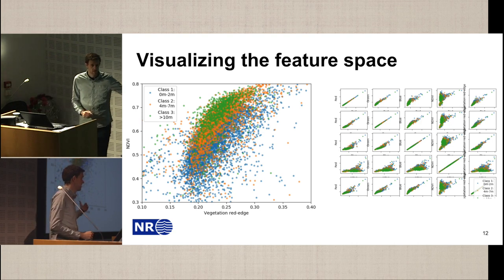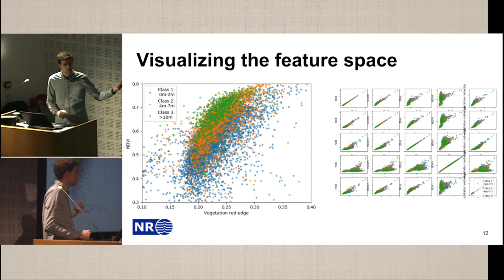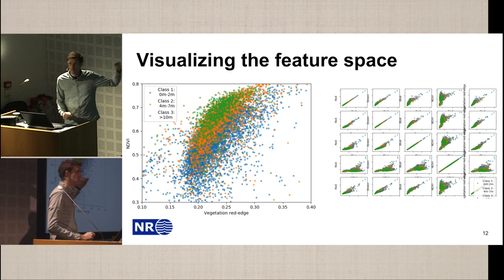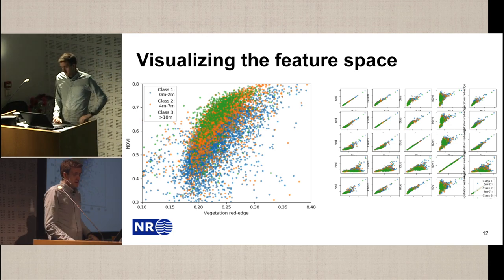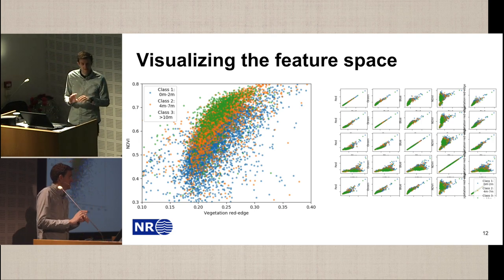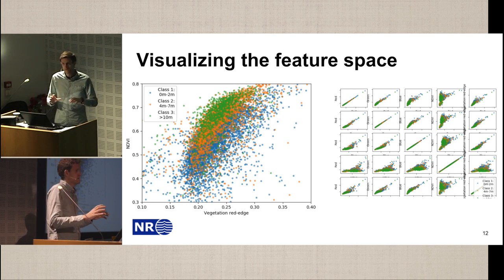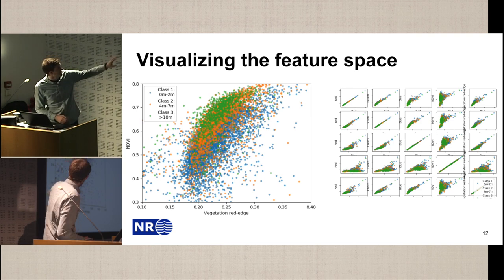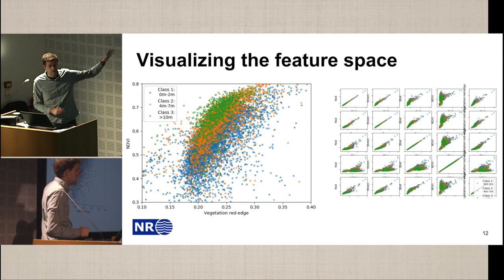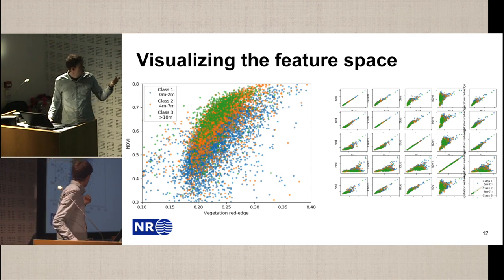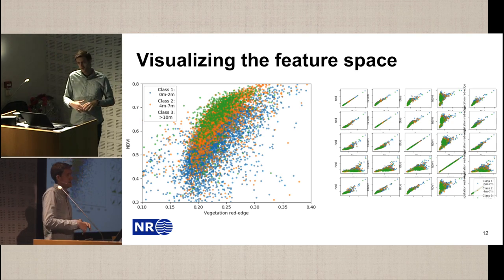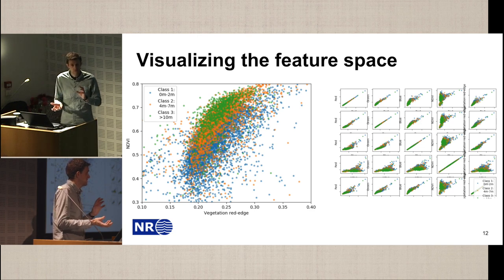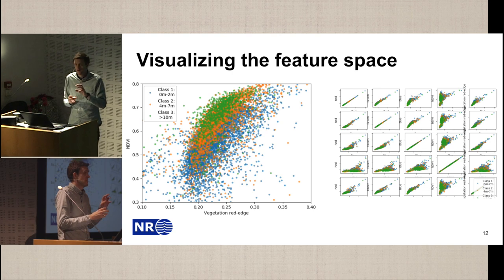If we do this with all the pixels in the image, we arrive at this plot. On one axis we have the red edge color channel, and on the other axis we have the NDVI. We also put colors on the pixels to indicate their ground truth class. We see that the three classes separate somewhat in this space. The green and blue dots are separable, but this is just two of the features we have. We have eight features in total, giving us up to 64 of these plots to explore which features separate the classes best.